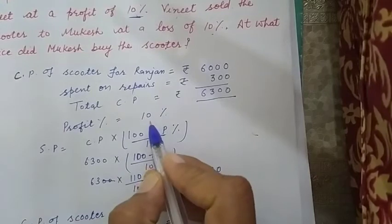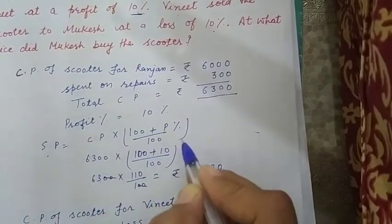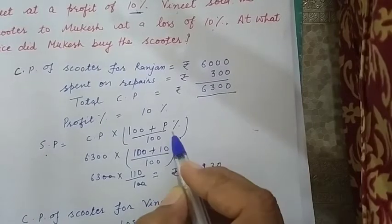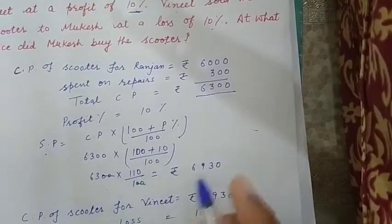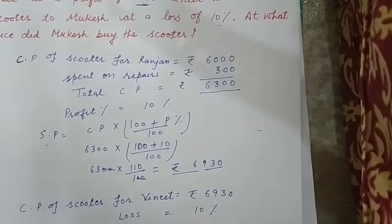Ki 10% profit ke baad uska selling price kitna ho jayega? Toh bachye profit aapko diya ho by 10%. Toh selling price hum nikal saktethe. Ye formula apply karayenge. 10% profit. Toh ye aapke paas Rs. 6,930 rupiz. Kya aajayegi selling price.